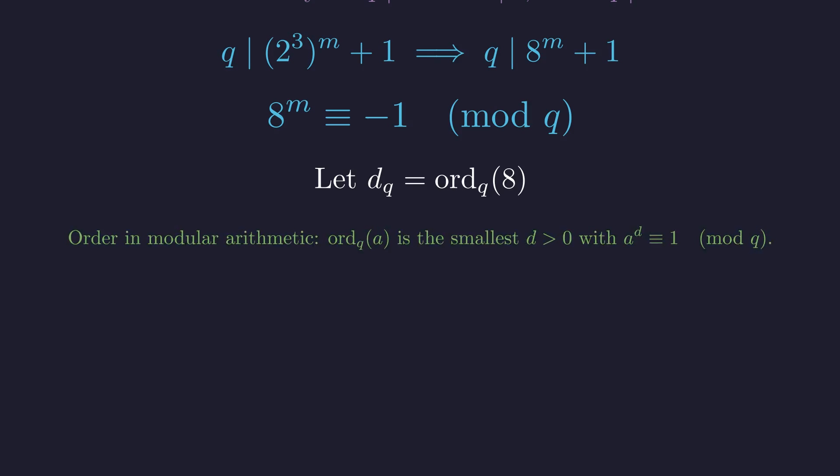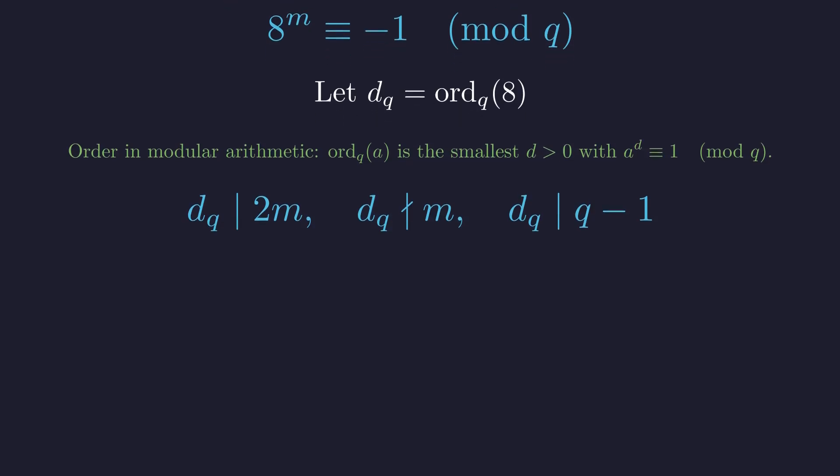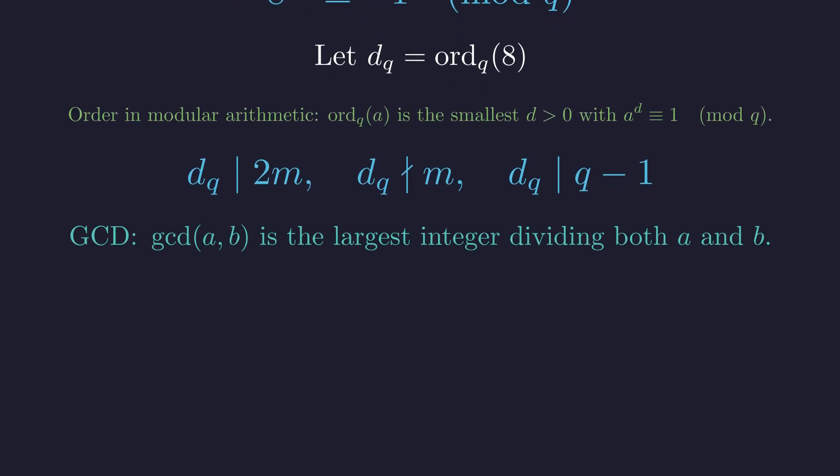Again, the order of a number a modulo q is the smallest positive integer d such that a to the d is congruent to 1 modulo q. Following the same logic as before, d sub q must divide 2m but not m. It must also divide q minus 1. The greatest common divisor, or GCD, of two numbers is the largest integer that divides both. Here, it tells us the largest possible order d sub q can have, since it must divide both 2m and q minus 1.